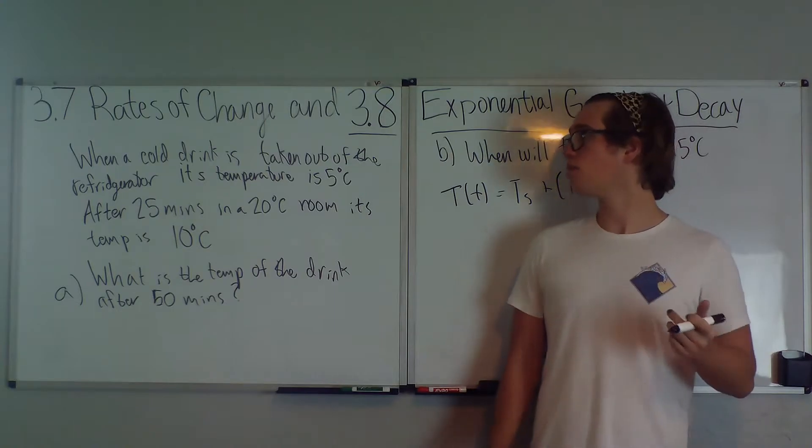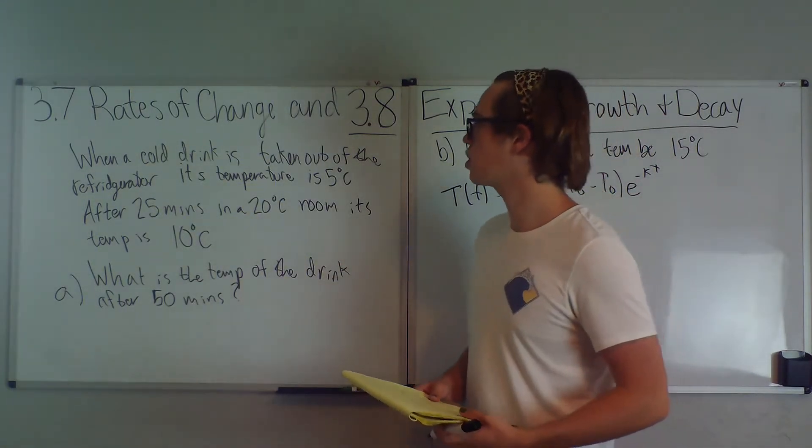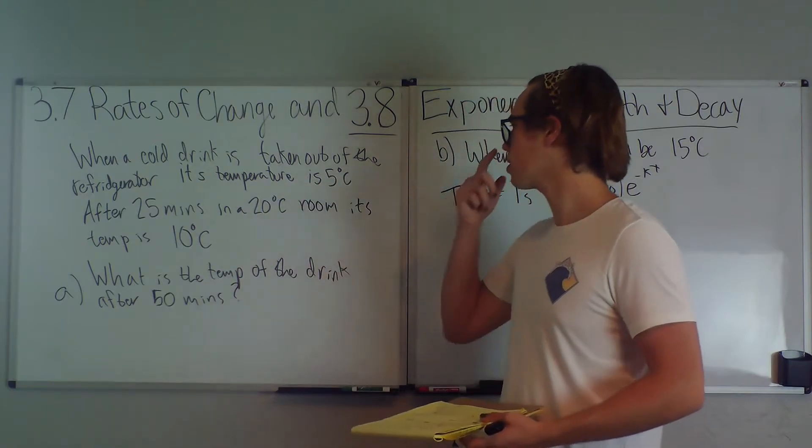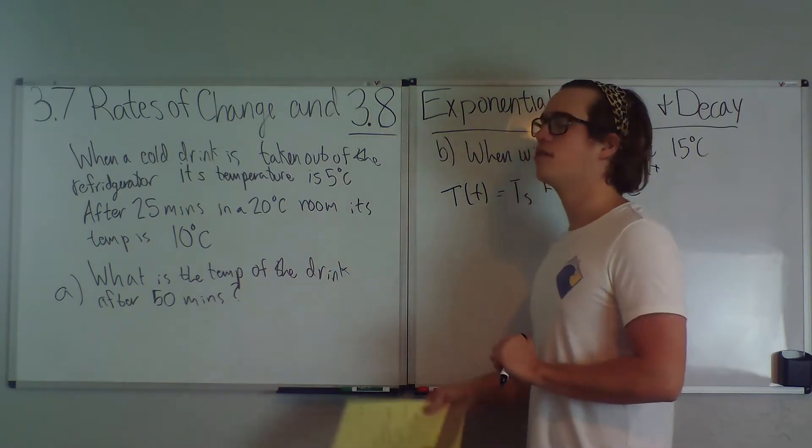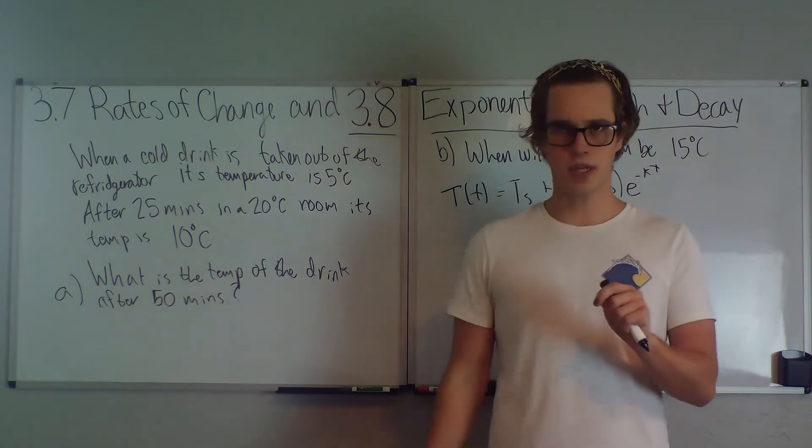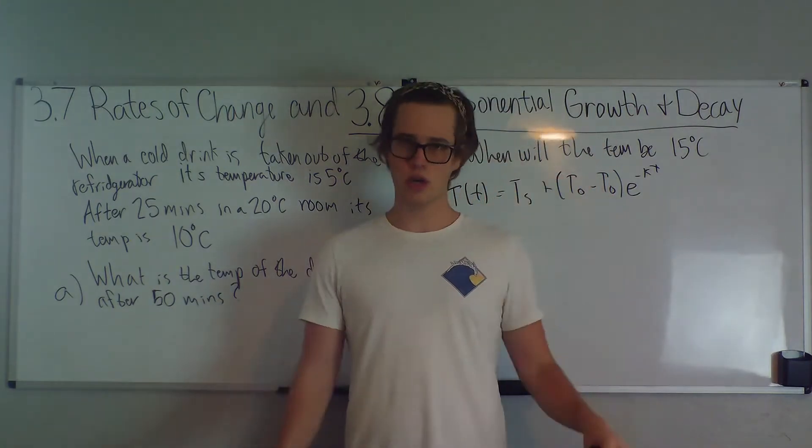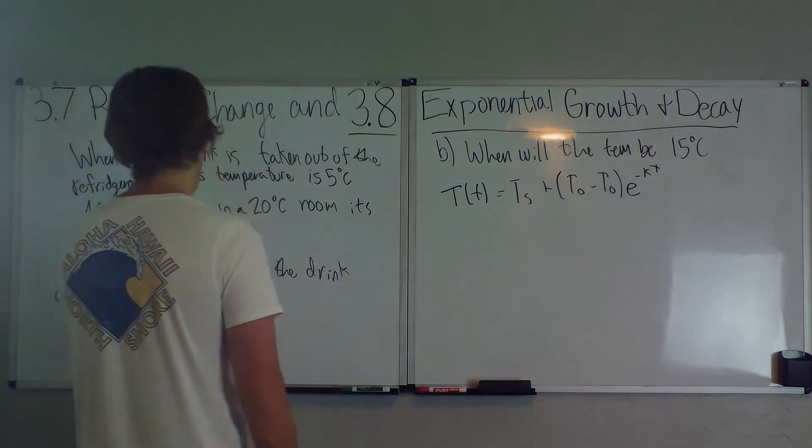All right, let's do our question. So it states, when a cold drink is taken out of the refrigerator, its temperature is five degrees Celsius. After 25 minutes in a 20 degrees Celsius room, its temperature is 10 degrees Celsius. What is the temperature of the drink after 50 minutes? And we think, well, we can't start solving this problem until we have the rate of the temperature change.